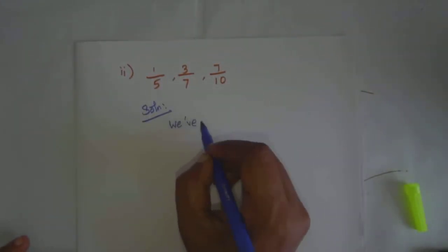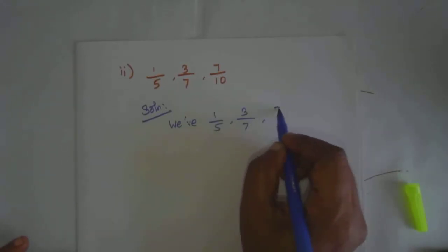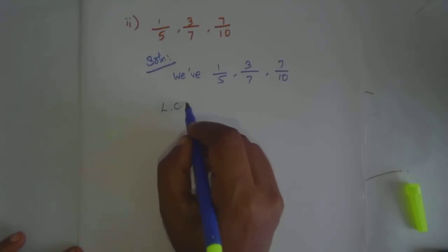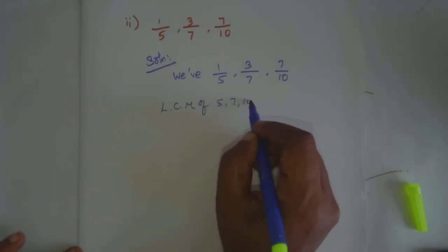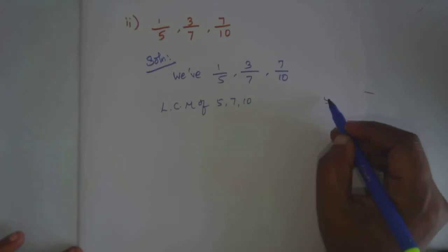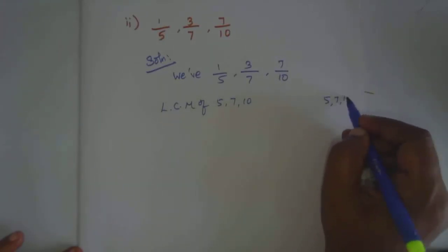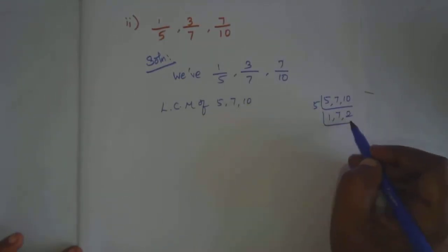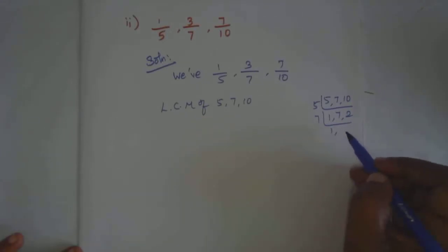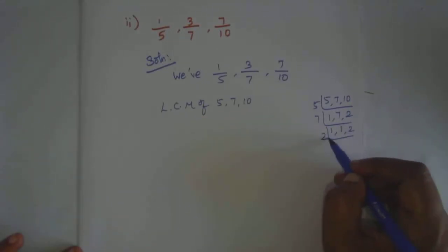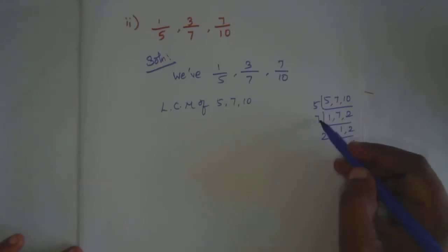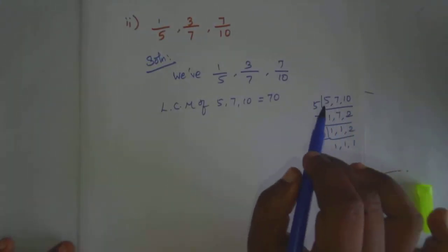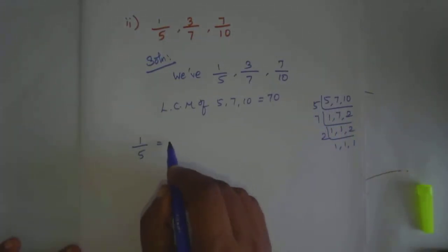Now what we have: 1 by 5, 3 by 7, 7 by 10. LCM of 5, 7, and 10. We have 5, 7, 10. Take the 5 table: 1 time 5 is 5, 7, then 2 times 5 is 10. Then 7 table: 1 time is 7, 2 times is 14. Then 2 table: 1, 1, 1, 5, 7 is 35; 35 into 2 is 70. So the LCM is 70. First we take 1 by 5 — we need denominator 70.